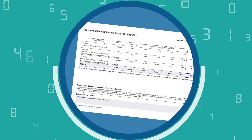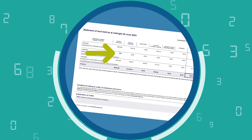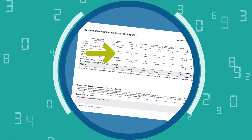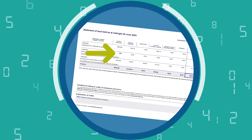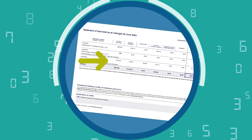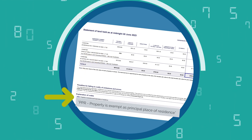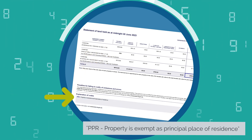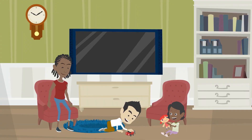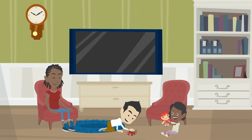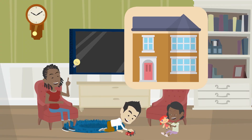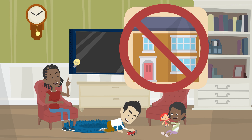If the land is exempt, you'll see a code instead of a dollar value in the site value column. You'll also see an explanation of the codes at the bottom of your statement of land held. If you see a code, it means we have an exemption for your home and land tax isn't charged on that property.